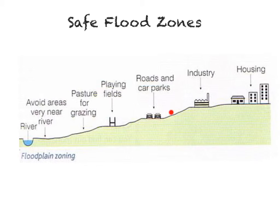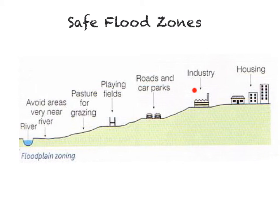Next to that there could be roads and car parks. If the river floods onto these it doesn't cause massive amounts of damage — they can be cleaned up once the flood waters recede. Further still, we have industry and housing, which would only be impacted by an extreme flood event, which is why they are located so far away from the river in this example.